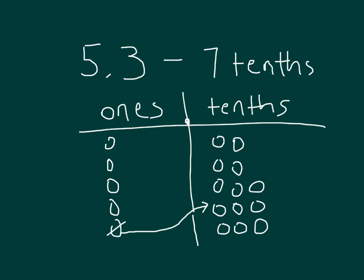So now I have 5 and 3 tenths still modeled by 4 ones with 13 tenths, and I can take away those 7 tenths — 1, 2, 3, 4, 5, 6, and 7. This leaves us with our answer of 4 ones along with 6 tenths. So 5.3 minus 7 tenths equals 4 and 6 tenths.